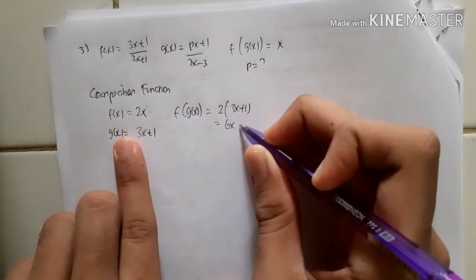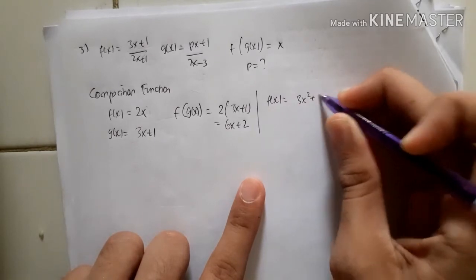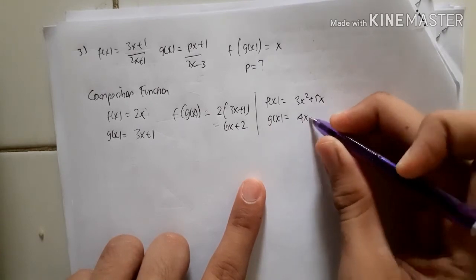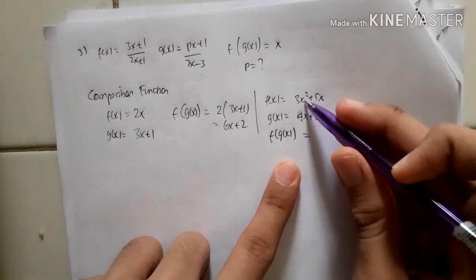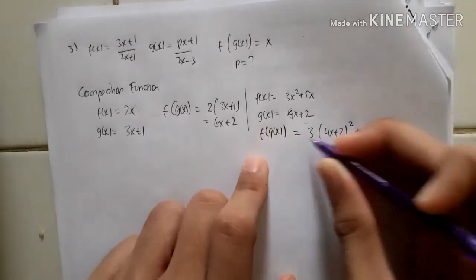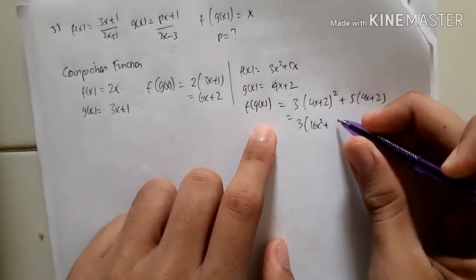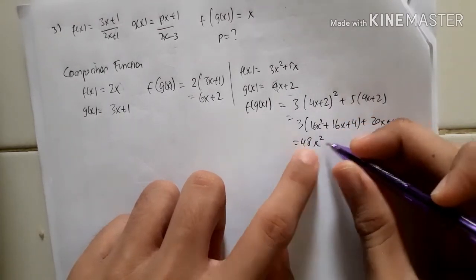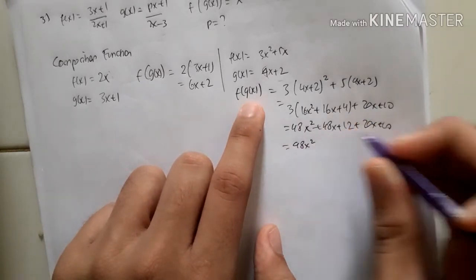So that gives 6x + 2. Let's try another example: f(x) = 3x² + 5x and g(x) = 4x + 2. Then f(g(x)) = 3(4x + 2)² + 5(4x + 2) = 3(16x² + 16x + 4) + 20x + 10 = 48x² + 48x + 12 + 20x + 10.